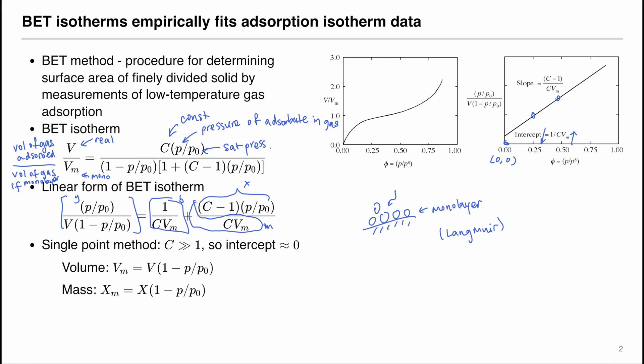If the constant C is sufficiently large, this whole term of b will go to zero. And at the right, the term C, because it is large enough, C minus one and C can cancel out. And then at the top, we have the same thing of p divided by p zero. So at the end, we have one over V times one minus p divided by p zero equals one over V of m.